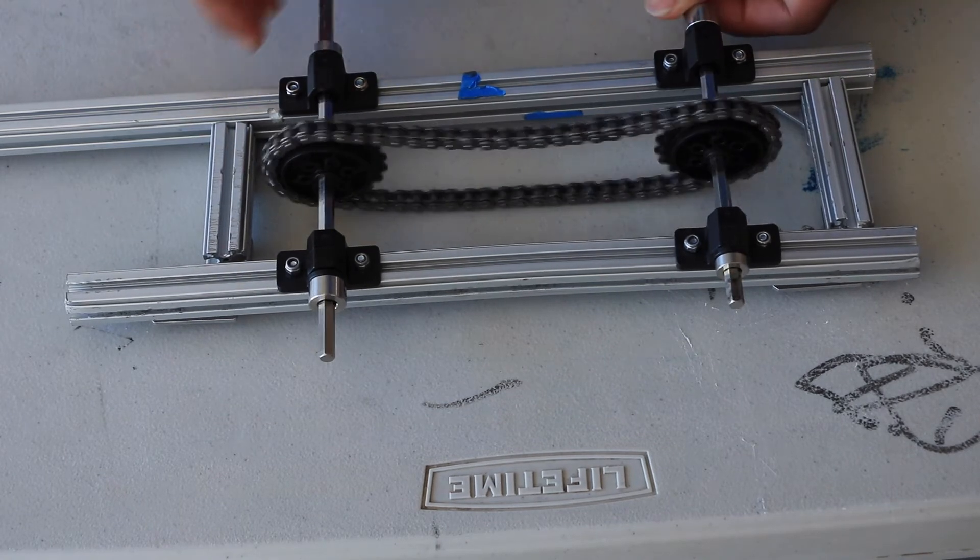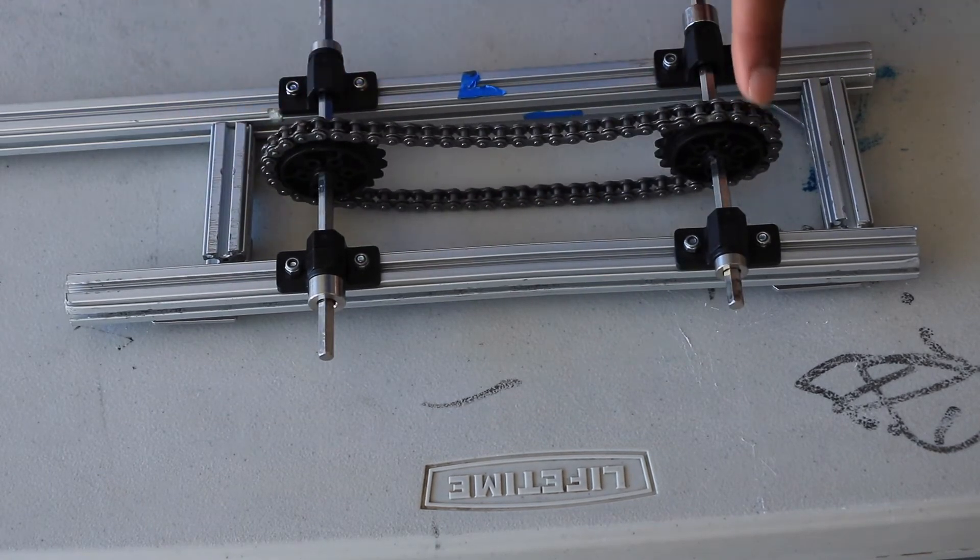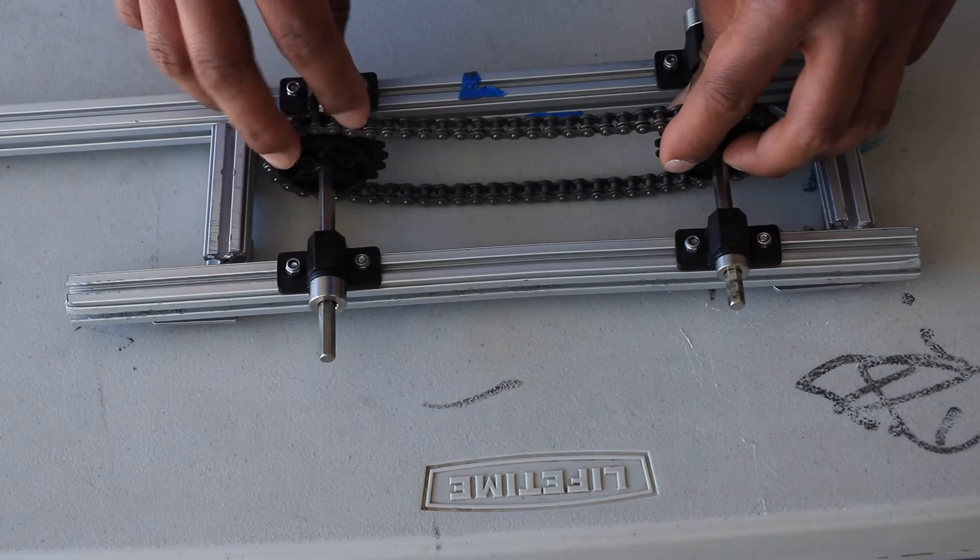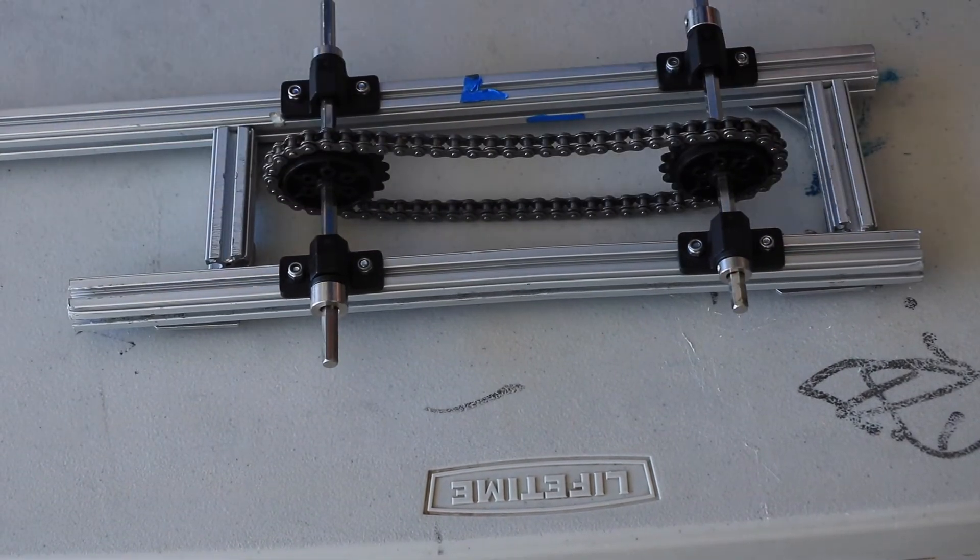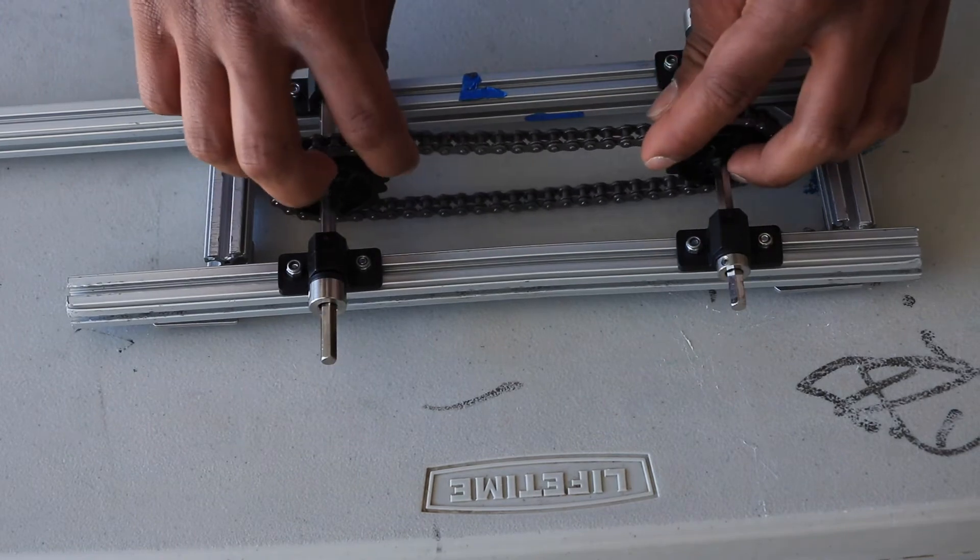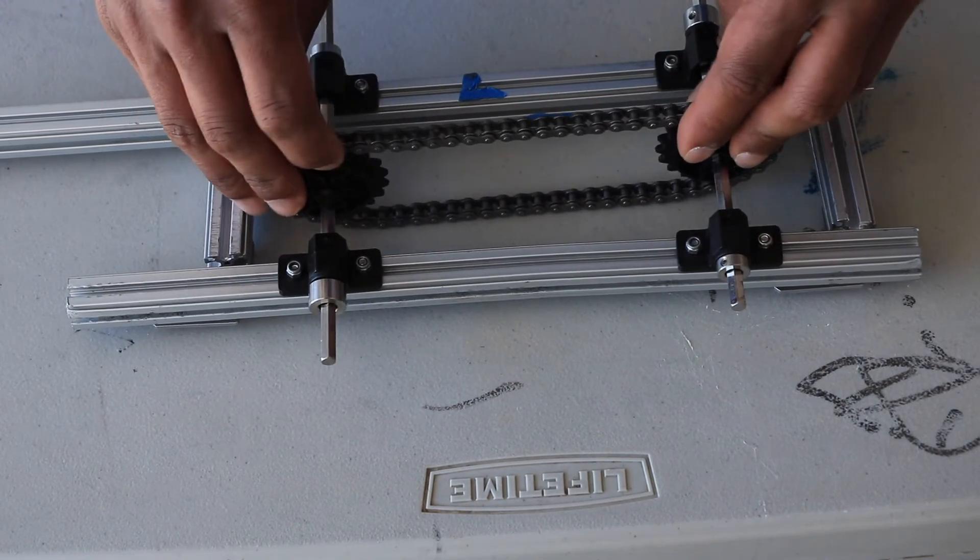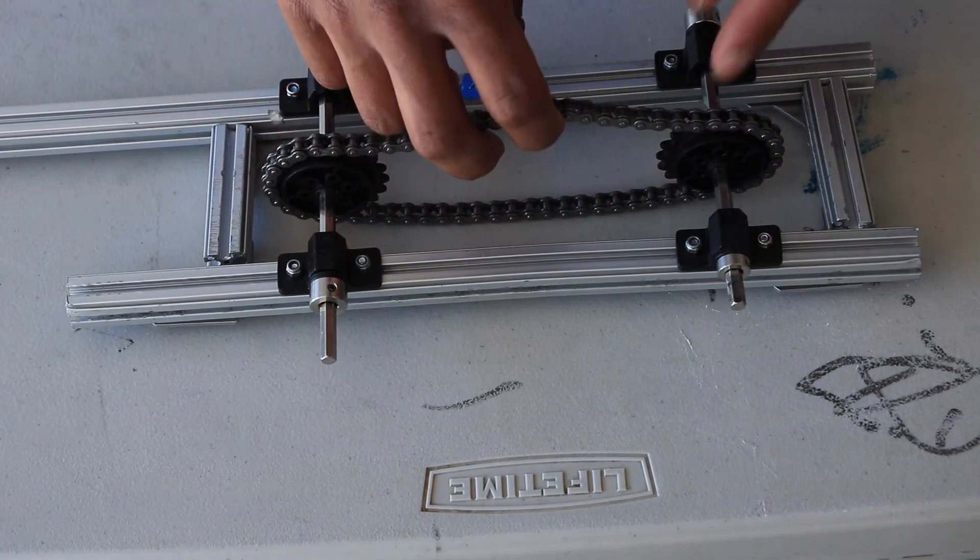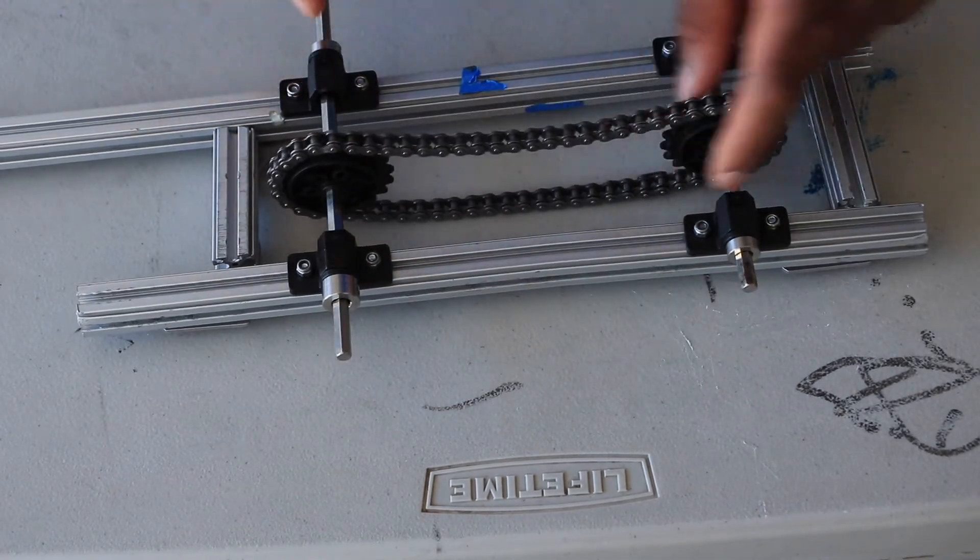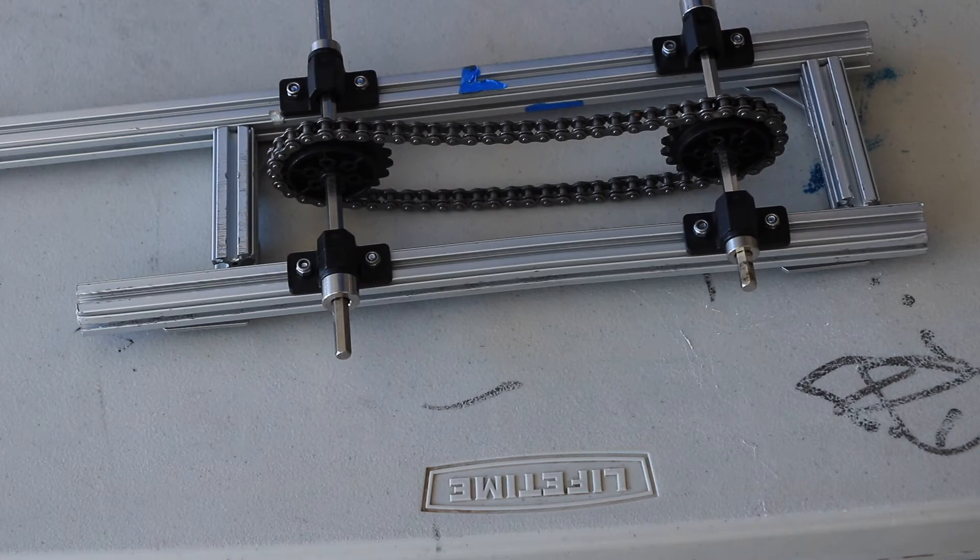However, these chains and sprockets are more complicated because they require three pieces for every system. Also, these chains need to be cut to a specific length in order to work. Because chains require special tools to cut them, that makes them more complicated.